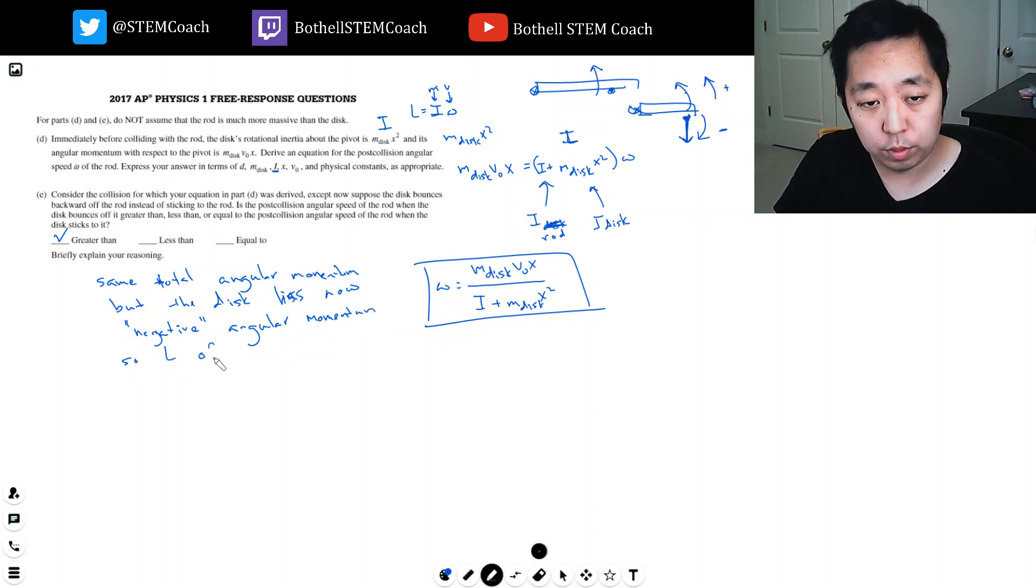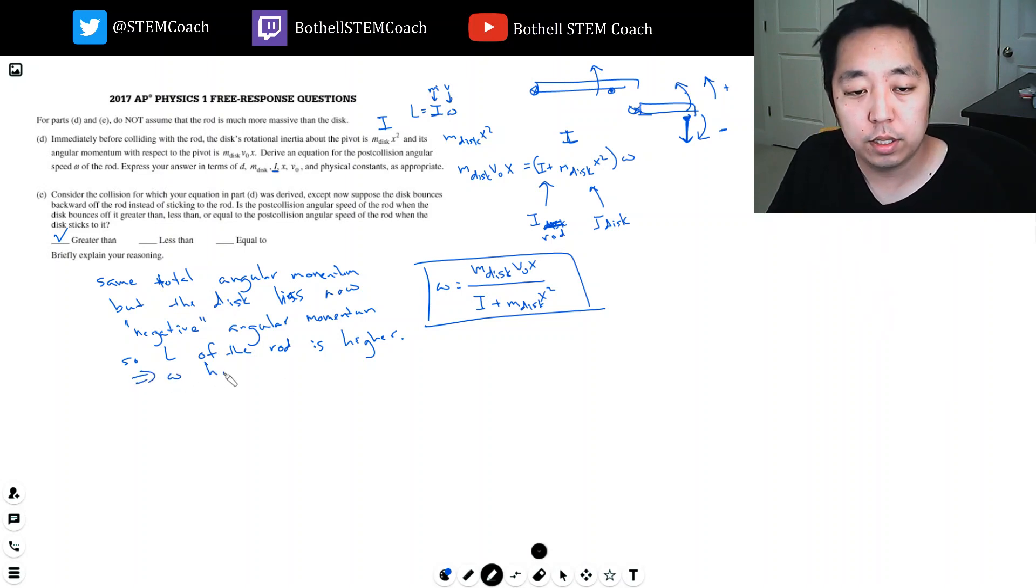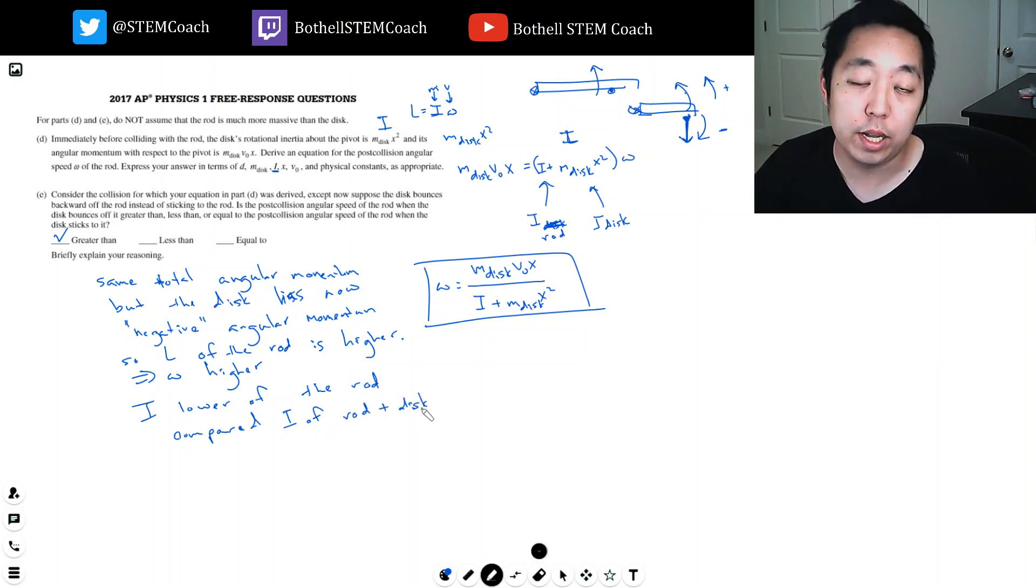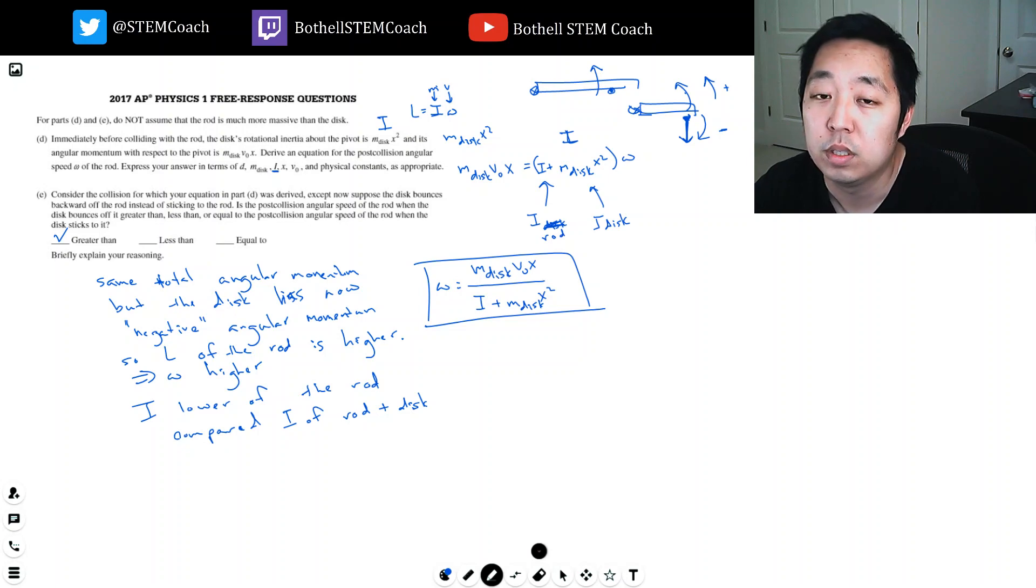So L of the rod is higher, which implies omega is higher. You also have to justify that I is also lower of the rod compared to I of rod plus disc. It's easier to rotate the rod by itself than the rod with the disc.